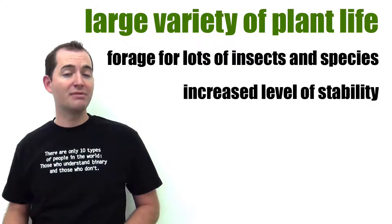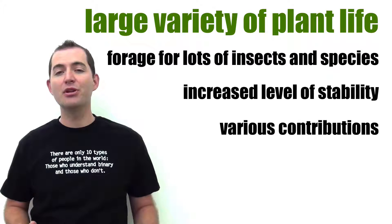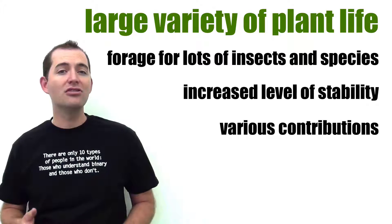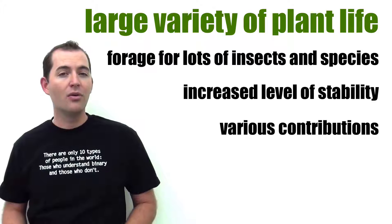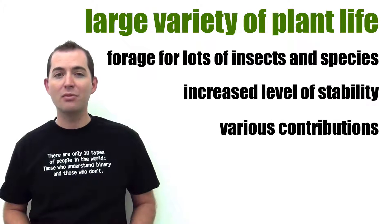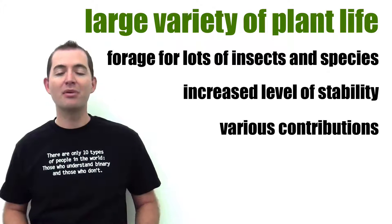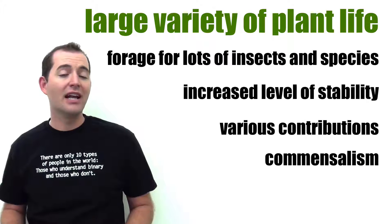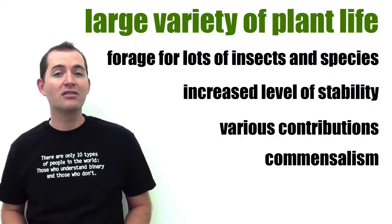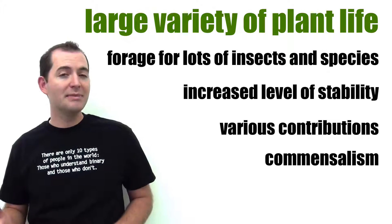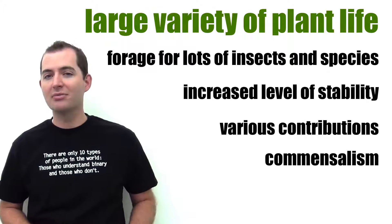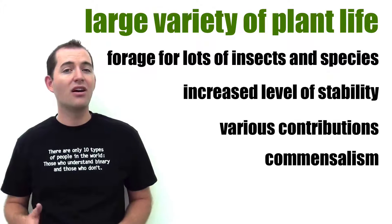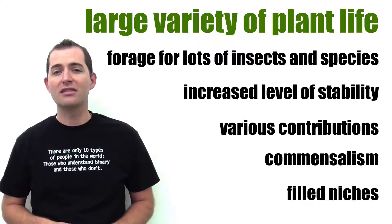The large variety of plants will allow for different ones to contribute in different ways to the ecosystem. For example, nitrogen fixers will be able to improve the soil, whereas plants with deeper roots will be able to pull nutrients from deep underground up to the surface. It's also more likely for plants to be able to work together in what is called commensalism, where one species benefits but no harm is brought to the others. The large variety of plants makes it so that all of the niches in the ecosystem are filled.